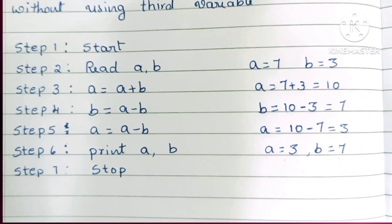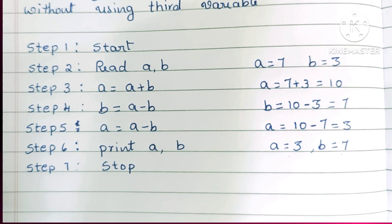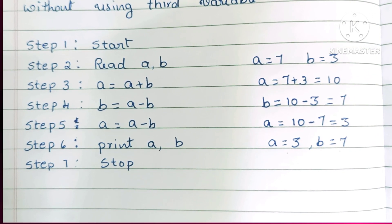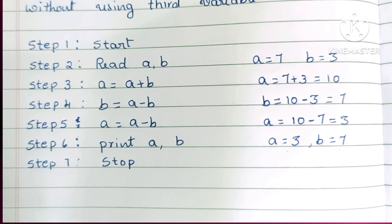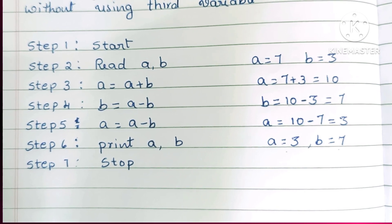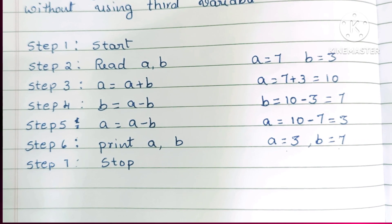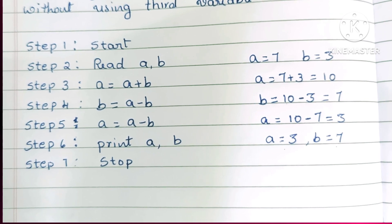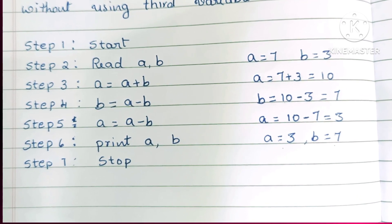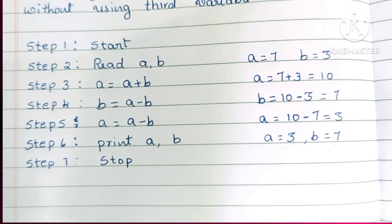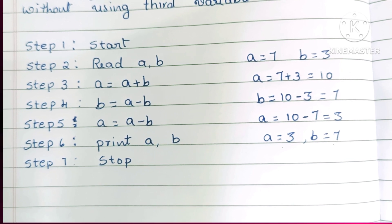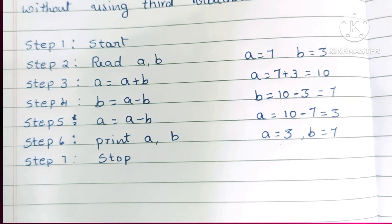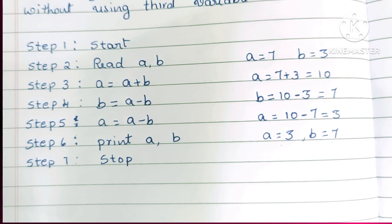To summarize, this is the algorithm to swap two variables without using a third variable: Step 1 — Start. Step 2 — Read a and b. Step 3 — a equals a plus b. Step 4 — b equals a minus b. Step 5 — a equals a minus b. Step 6 — Print a and b. Step 7 — Stop.